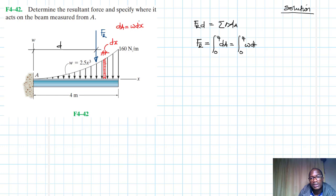It is w dx which equals integral from 0 to 4 of 2.5x³ dx. If we integrate that, this becomes 2.5 times x⁴ divided by 4, and we are evaluating this from 0 to 4. This therefore gives us 2.5 times 4⁴ divided by 4, which gives us 160 newtons.